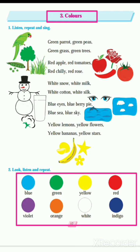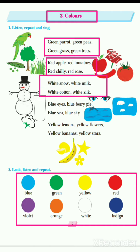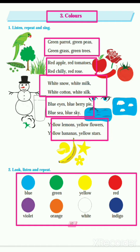Green parrot, green peas, green grass, green trees. Red apples, red tomatoes, red chili, red rose. White snow, white milk, white cotton, white silk. Blue eyes, blueberry pie, blue sea and blue sky. Yellow lemons, yellow flowers, yellow bananas, yellow stars.